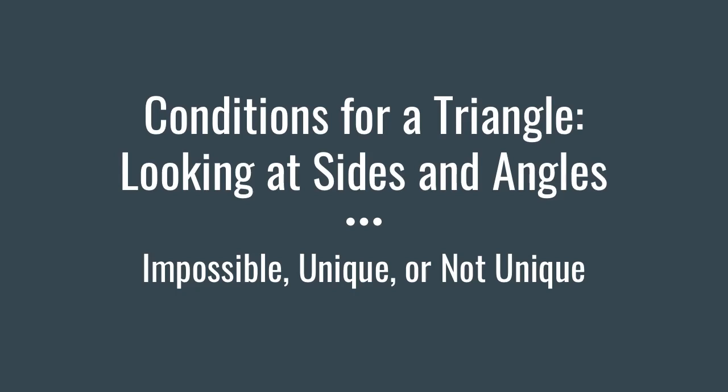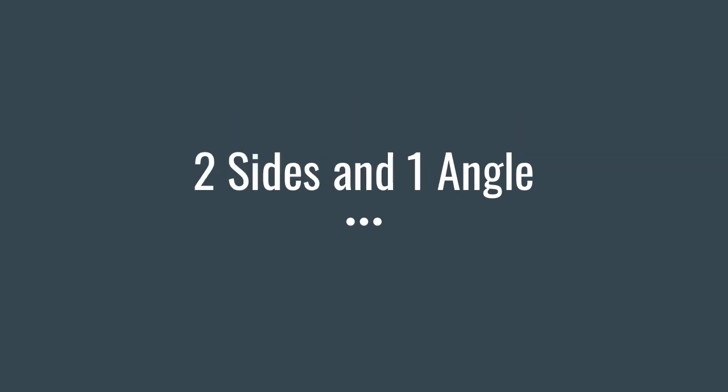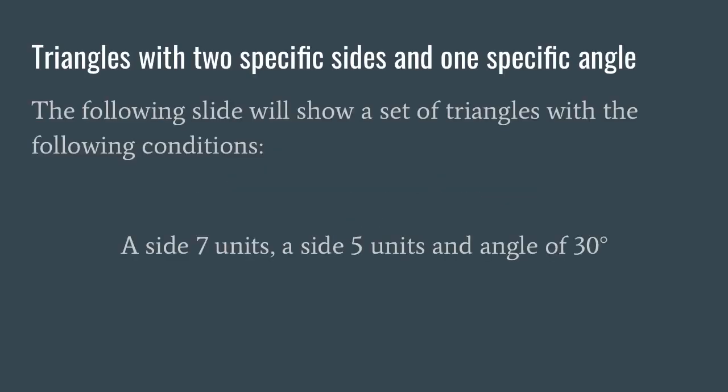This is a video on conditions for a triangle, looking at sides and angles. We're going to look at two conditions. The first condition is two sides and one angle — triangles with two specific sides and one specific angle. The following slide will show a set of triangles with the following conditions: a side of seven units, a side of five units, and an angle of 30 degrees.